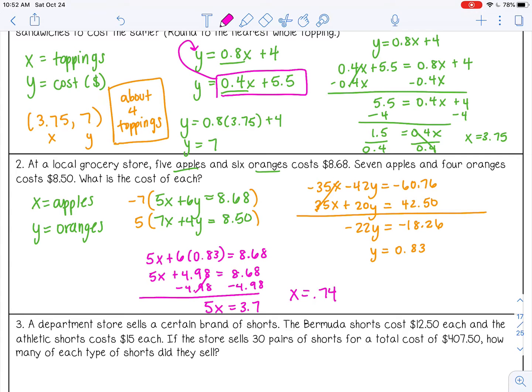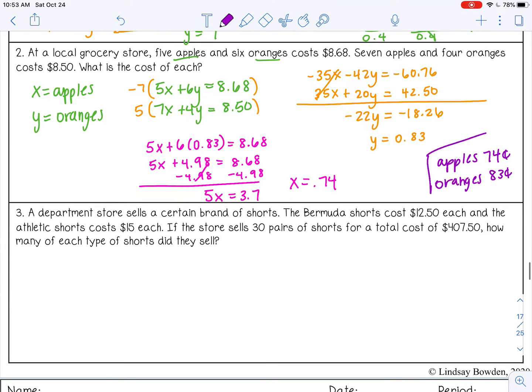All right, so let's write our actual answer here. So apples are 74 cents each. Oranges are 83 cents each. All right, last one.